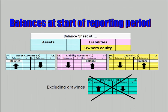Finally, let's think about balances at the start of the reporting period. Only assets, liabilities, and capital have opening balances in the ledger accounts. The way to remember this is to ask whether that type of item appears in the balance sheet — if yes, it can have an opening balance. Assets, liabilities, and owner's equity (capital) all appear in the balance sheet, so they have opening balances. The exception is drawings: although drawings appears in the balance sheet as a negative owner's equity account, it does not have an opening balance.